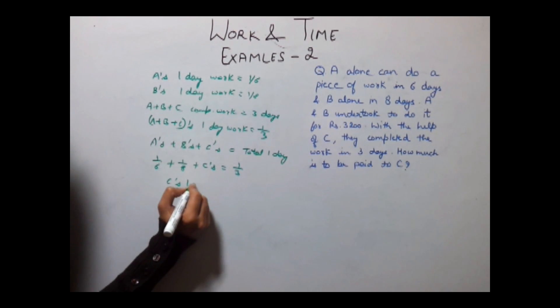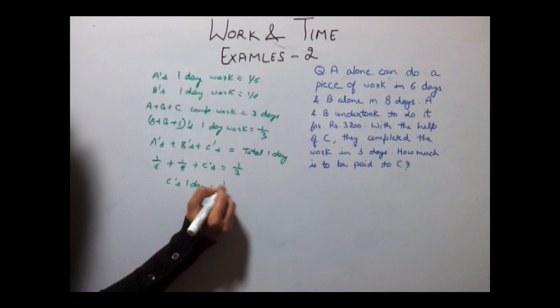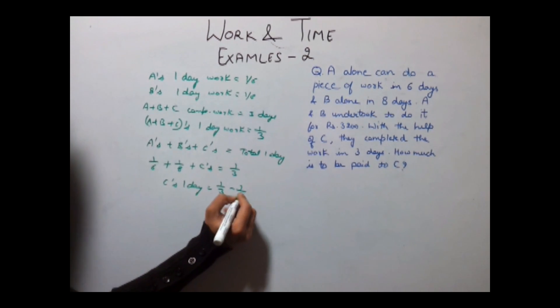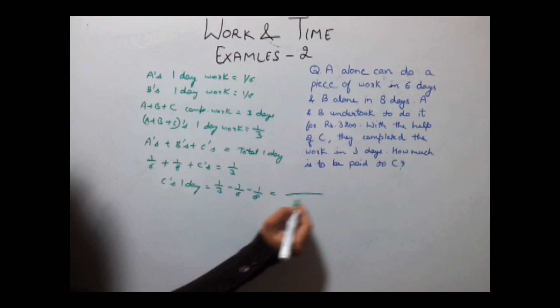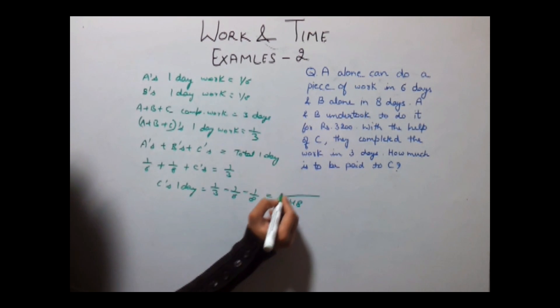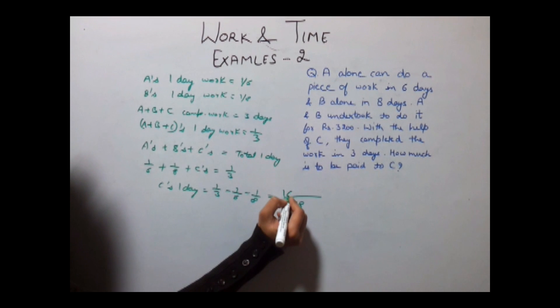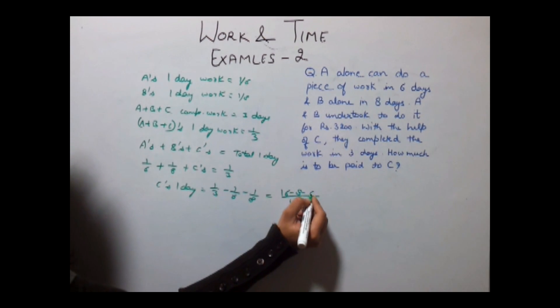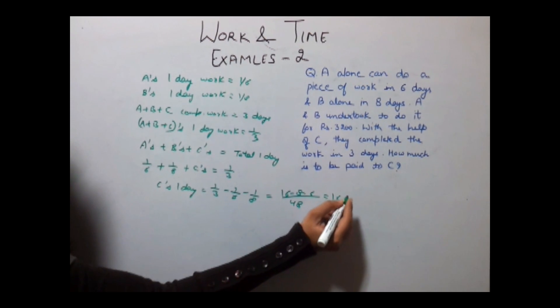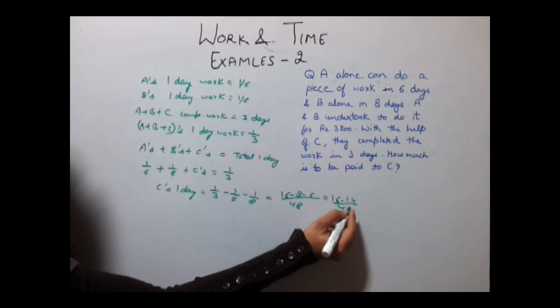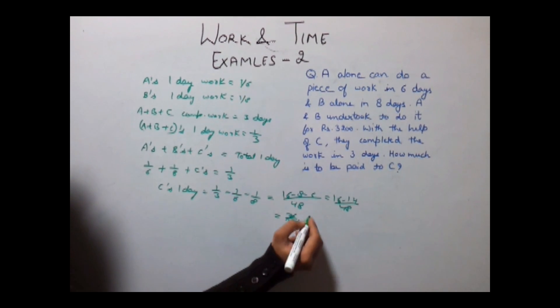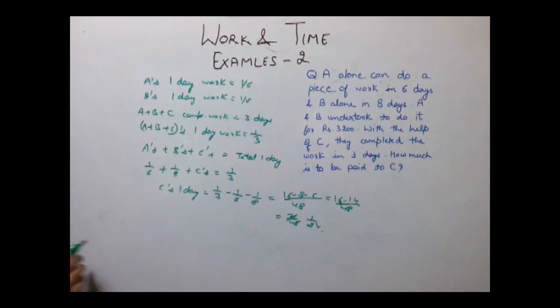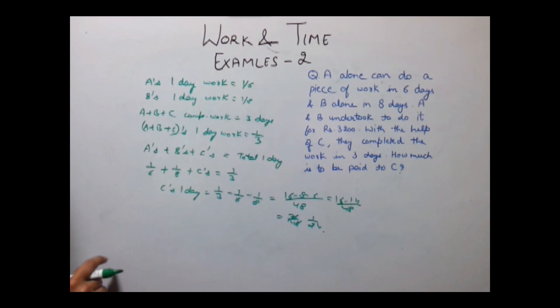So C's one day work is equal to 1/3 minus 1/6 minus 1/8. Taking the LCM we get 48. It is 3 into 16 minus 8 minus 6, that is 16 minus 14 upon 48, which gives us 2/48 that is 1/24. So C's one day work is 1/24.